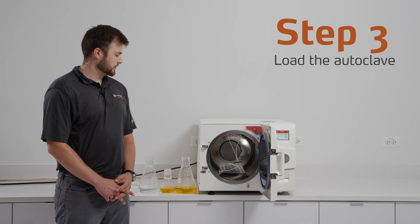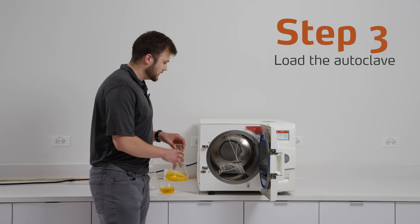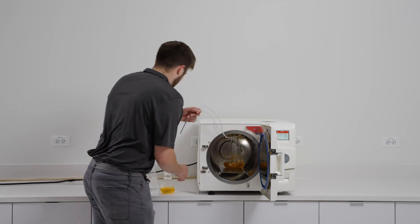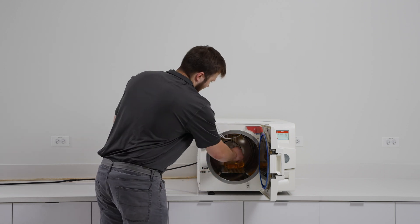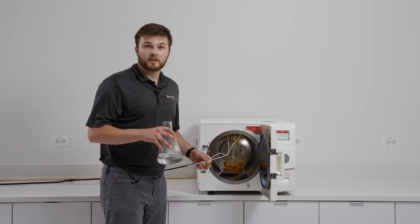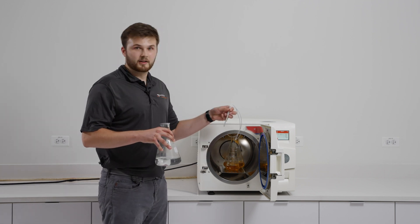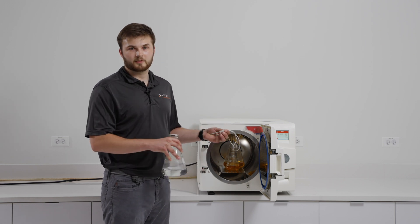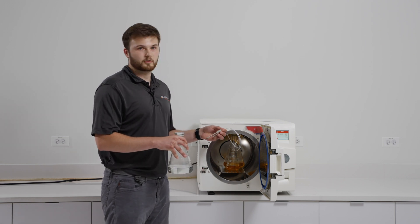Now that you have prepped your media, you are good to start loading your autoclave. Please make sure to put your media in the back of the unit, and the control vessel far to the front. The reason for that is because the probes are located at the front, and it is way easier to just stick them in that control vessel if it is located at the front. It also makes unloading the autoclave much easier.